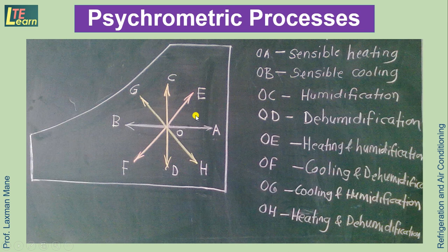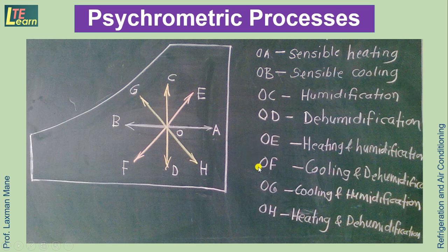Psychrometric processes are carried out on air which is to be conditioned in order to maintain its temperature and humidity — that is, moisture content. There are four main standard processes: process OA is sensible heating, OB is sensible cooling, OC is humidification, and OD is dehumidification.